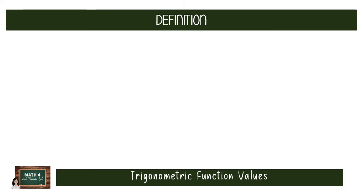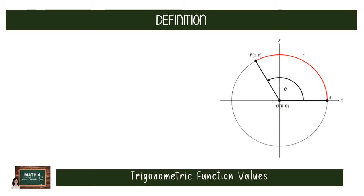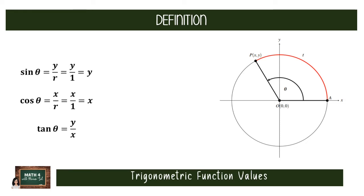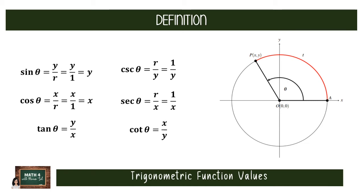We will still use the unit circle to determine trigonometric function values of real numbers, not just special angles. If we have an angle theta measuring t radians with coordinates (x, y) on the unit circle, we can use the same six ratios: sine theta equals y, cosine theta equals x, tangent theta equals y over x, cosecant theta equals 1 over y, secant theta equals 1 over x, and cotangent theta equals x over y. Note that sine theta equals y and cosine theta equals x only when the point is on the unit circle, which we will assume for most examples.